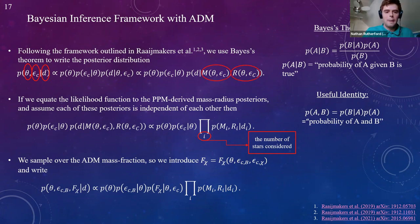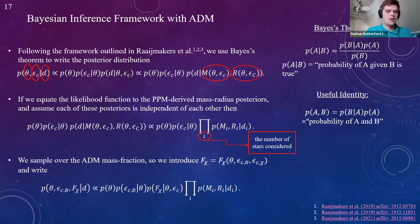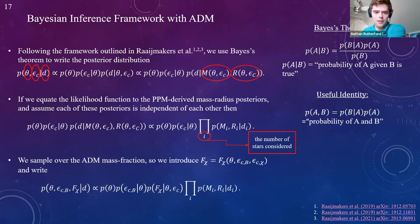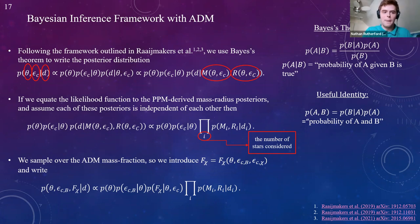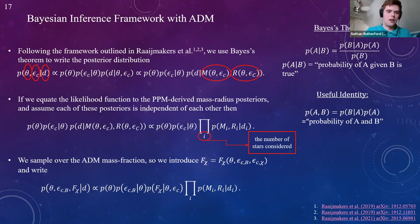Making a simplification, we equate the likelihood function to the PPM-derived mass-radius posteriors, and assume each posterior is independent, resulting in a product of likelihood functions over all stars considered — six in this case. When introducing ADM, we sample over the ADM mass fraction by introducing a new vector, rewriting our previous proportionalities. This defines our inference framework. The reason we sample over the mass fraction is that our mass-radius algorithm is structured so that the dark matter energy density is dependent on the mass fraction.